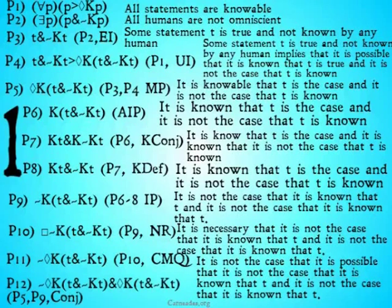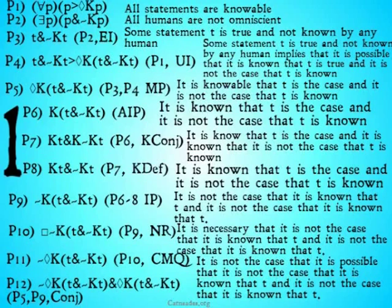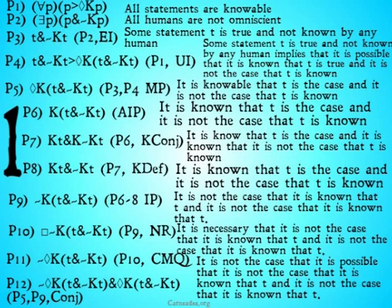We can then conjoin premise 11 and premise 5 to get a contradiction. If we get a contradiction, that means one of our original premises is incorrect and must be denied. The only options are to say that there is some statement that is not knowable, or that all statements are in fact known — either we as humans are in fact omniscient, or there exists some statement that is not knowable.